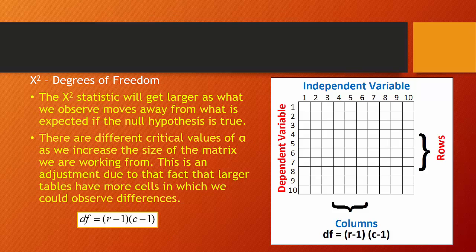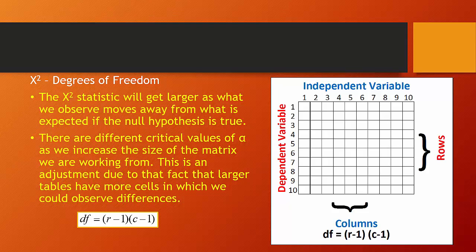Degrees of freedom are determined by taking the number of rows in a table, subtracting one, and multiplying by the number of columns minus one. The chi-square gets larger as we move away from what is expected under the null hypothesis, but it also gets larger as we increase the size of our table — as we add more cells, there are more opportunities to observe differences between what's observed and what's expected. Degrees of freedom can be determined relatively quickly.